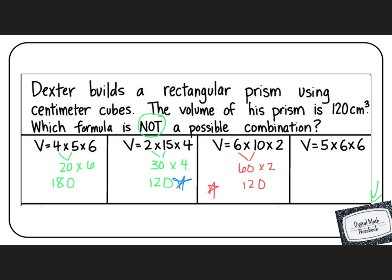And our last one we have, V = 5 x 6 x 6. 6 times 5 is 30. Times 6, 6 times 3 is 18. And we add a 0 on the end. And, uh-oh, that one also got us to 180. So that won't work. So the ones that would not work would be our first number and our last number.